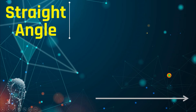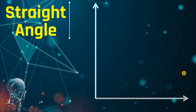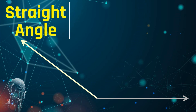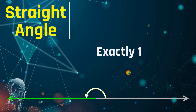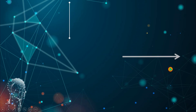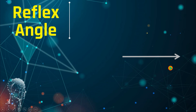Next, let's have the straight angle. You will see that the terminal ray moves from the initial ray going all the way to form a straight line. Therefore, a straight angle has a measure of exactly 180 degrees.